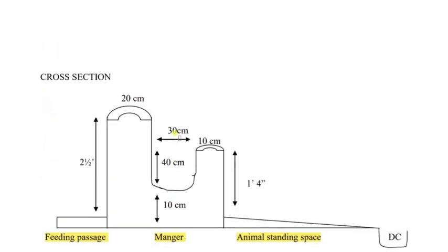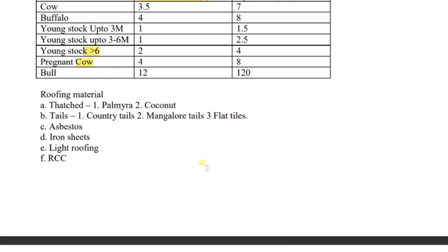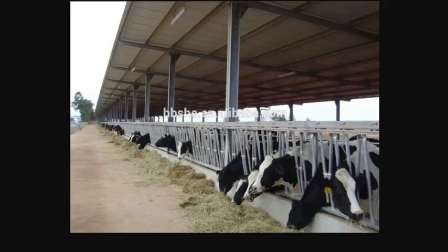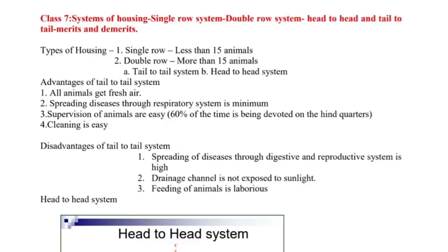Next, roofing material. Roofing is very important. Types include cement, palmera — which is a hard material used as shed preparation. In proper villages it will be completely covered with coconut roofing. There are also country tiles or Mangalore flat tiles, iron sheets, reinforced cement, and light roofing.